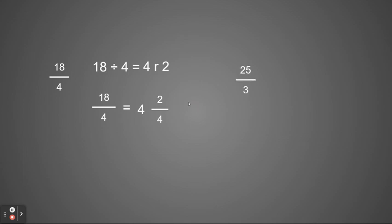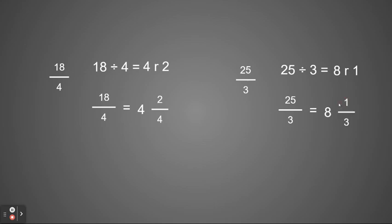Here's one more problem. Twenty-five thirds. I'm going to start with twenty-five divided by three, and three goes into twenty-five eight times with a remainder of one, because eight times three is twenty-four and one more is left over. So twenty-five thirds is going to be equal to a whole number of eight with one third remaining — eight and one third.